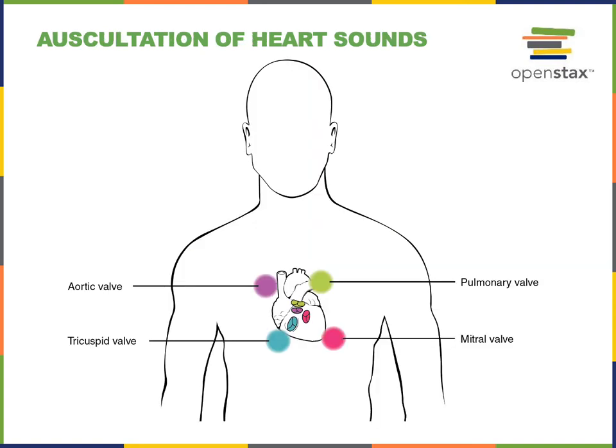Auscultation is the practice of listening to the sounds of the body. Using a stethoscope, we can listen to the heart sounds. The characteristic sound of the heartbeat is lub-dup, lub-dup, lub-dup. The lub is the first heart sound, or S1, resulting from the closing of the atrioventricular valves. The dup is the second heart sound, or S2, resulting from the closing of the semilunar valves.